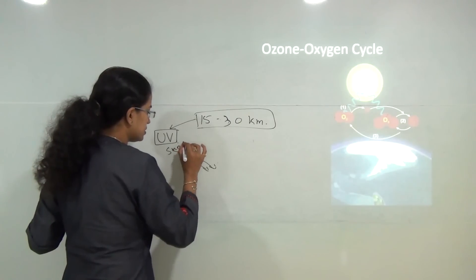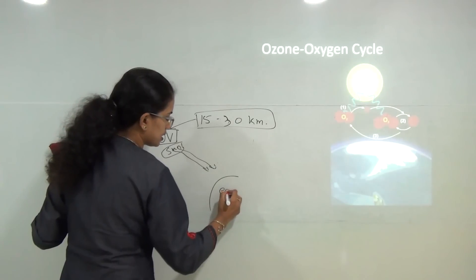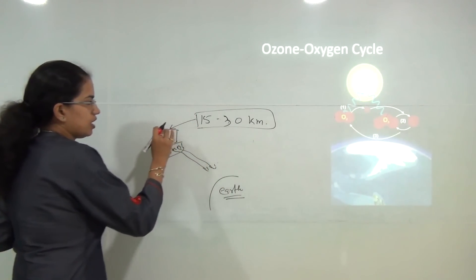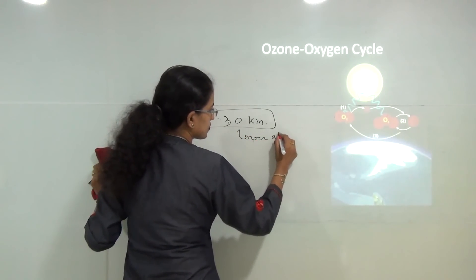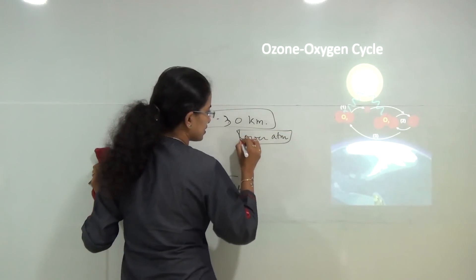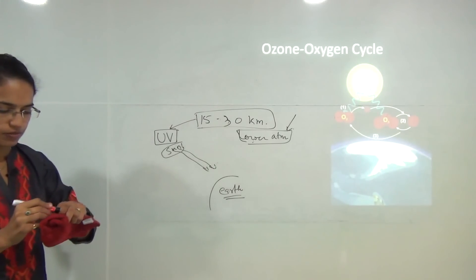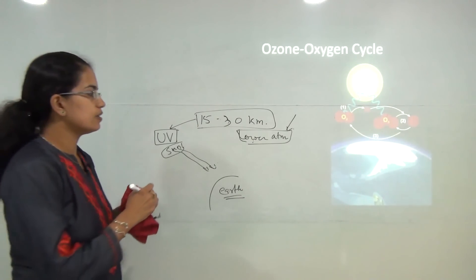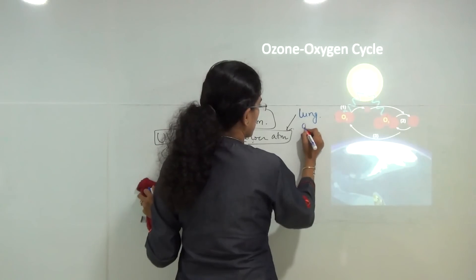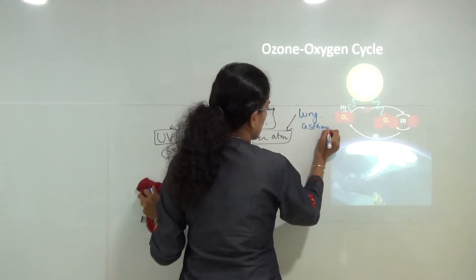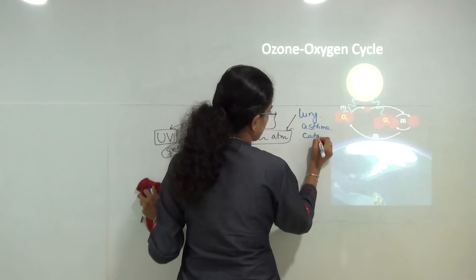However, if ozone is present in the lower atmosphere, it is harmful. In the upper atmosphere it protects against harmful ultraviolet rays, but in the lower atmosphere it can lead to various lung diseases, asthma, and problems of the eye — particularly cataract and clouding of the eyes.